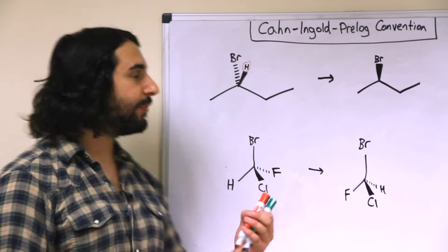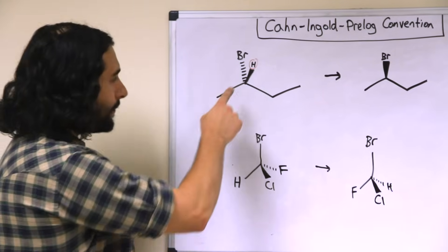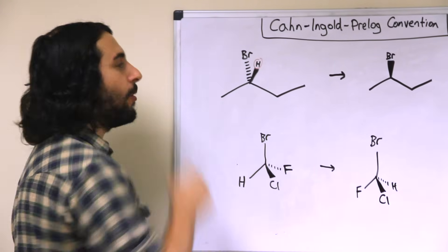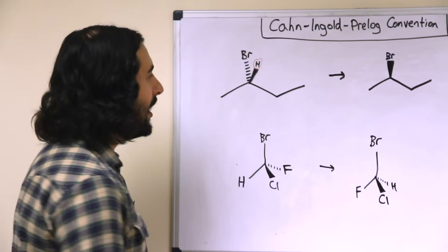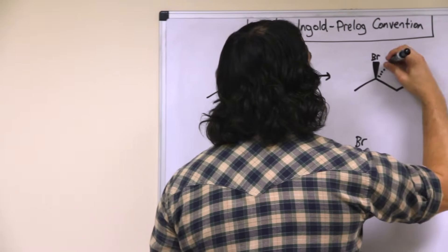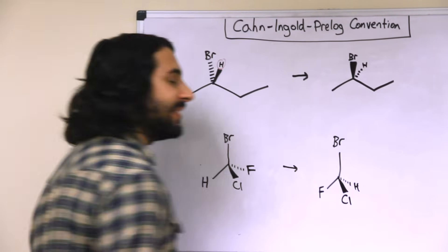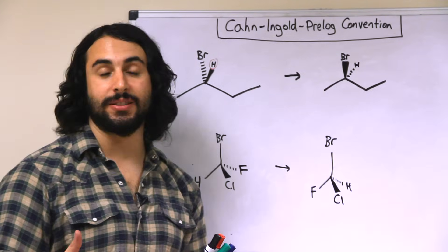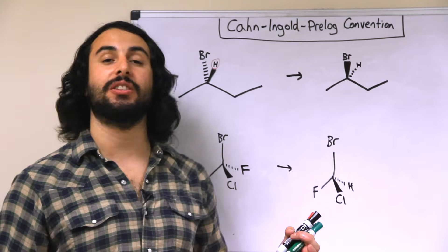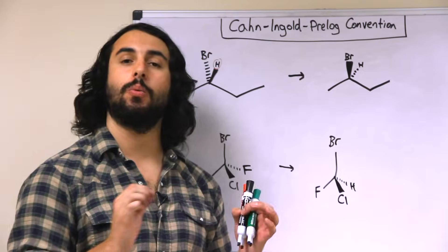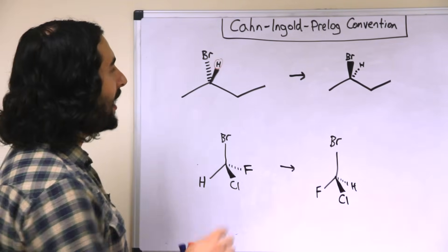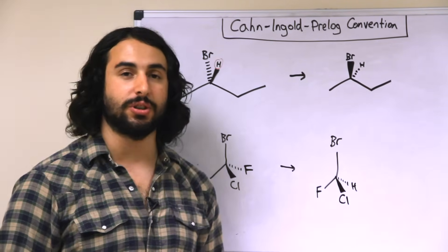So there are other tricks we can do. For example, we can arbitrarily switch the bromine and the hydrogen, placing the bromine on the wedge and the hydrogen on the dash. Now, this is sort of a cheat because we're redrawing a completely different molecule.